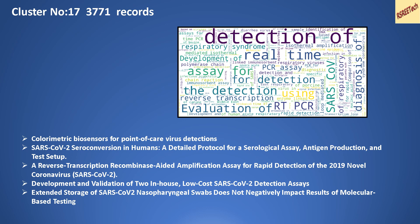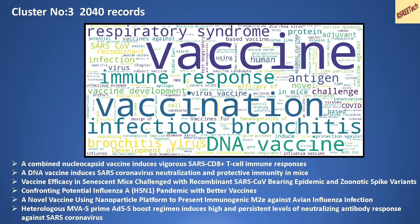Cluster number 3 has close to 2,000 records. The word cloud from titles highlights words like 'vaccine', 'immune response', 'antigen', and 'vaccination'. This cluster contains papers related to vaccine development. Pulling up the titles confirms this — they discuss novel vaccines or the efficacy of vaccines. If you need to research further on vaccines, this is a good cluster to look at.